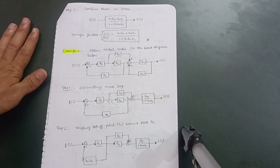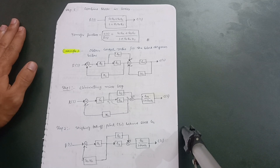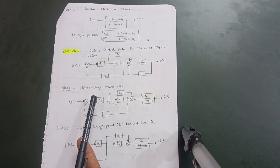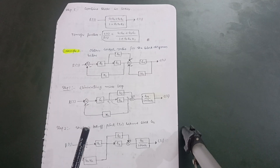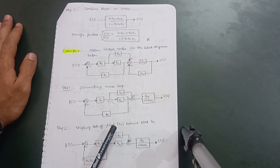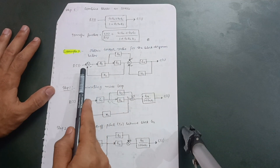We are discussing the Control Engineering subject, Module 3, Block Diagram Reduction problems. This is the third problem. I have already completed two problems and shared the links in the description box, including the rules for reducing block diagrams. This is the third and last problem I will be doing here. I have made handwritten notes and will share the Telegram link so you can access them.